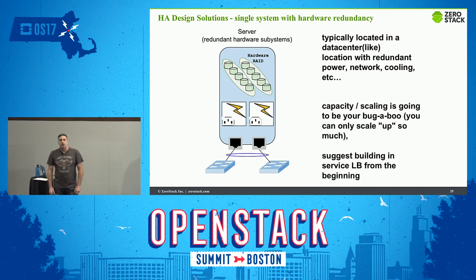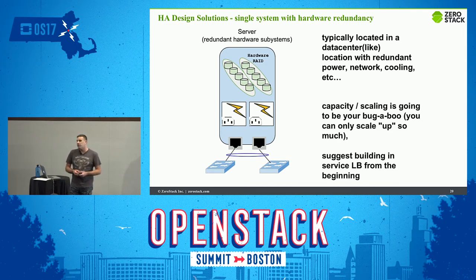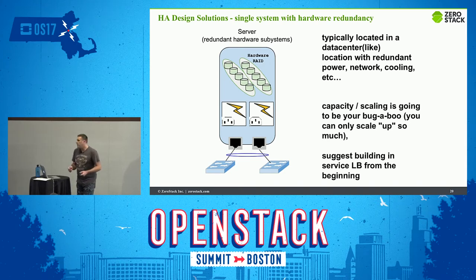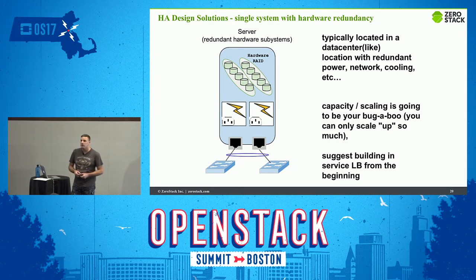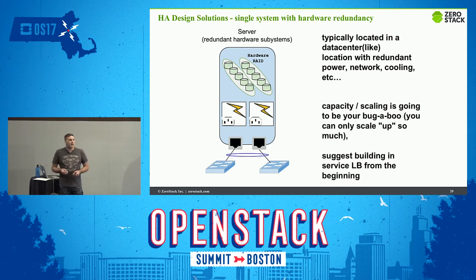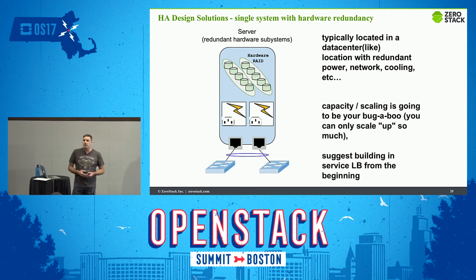I'm a cloud infrastructure architect at Xerostack. We do a private cloud solution with a bunch of hybrid cloud stuff layered on top. Previously I worked at Symantec on a cloud platform engineering team as an infrastructure architect doing very large-scale cluster designs for OpenStack. I've been around technology for a long time, from mainframes through cloud infrastructure architecture. Today's talk is on OpenStack control plane architectures and the various ways to achieve high availability or non-high availability solutions.